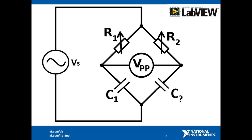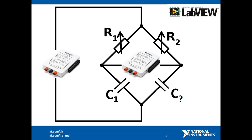Because we're driving the bridge with alternating current, the capacitors can be considered to just be resistors. We can then adjust the variable resistors to balance the bridge. We employ the MI-DAC's frequency generator to supply AC of known frequency, and then we can use the oscilloscope on the MI-DAC to measure VPP. Once the bridge is balanced, we can use the MI-DAC's digital multimeter to measure the exact resistances of the variable resistors. We now have everything we need to work out the unknown capacitance, and we can let LabVIEW do all of the equation work for us.